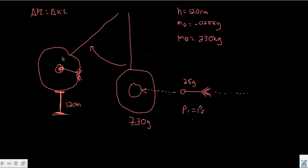Here's what happens: the dart is thrown, hits the target, and then the dart and the target together swing up, converting kinetic energy. So we have a kinetic energy initial here — that's the dart's KE — and that's going to hit the target and transfer into a kinetic energy final. We'd have to assume that this is going to be inelastic, because as the dart hits the target, these are definitely not going to move at the same speed.